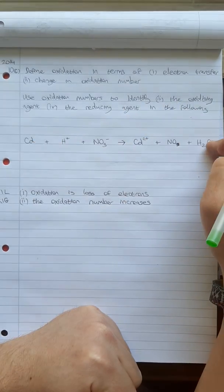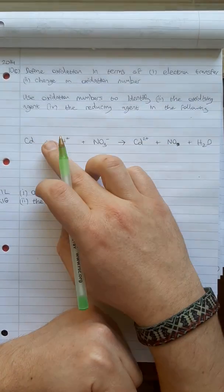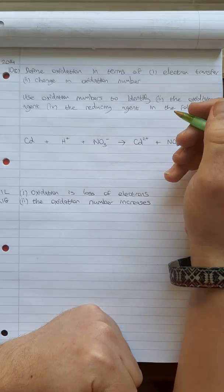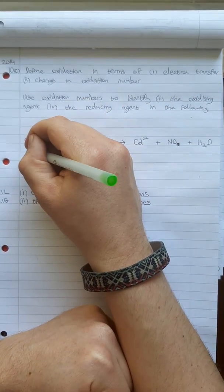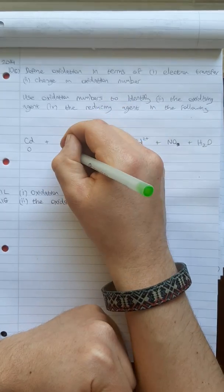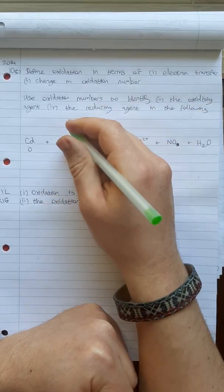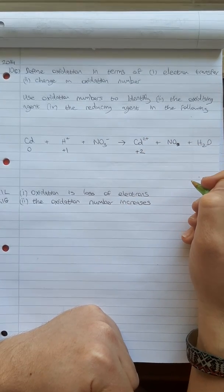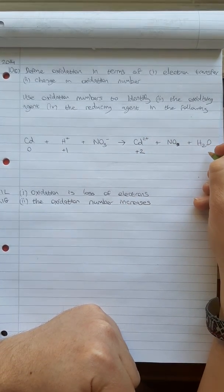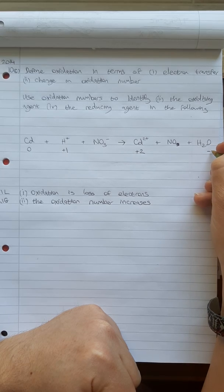So if we just look at this equation, I've given myself plenty of room this time. So you can see exactly what's going on. So I'm going to just assign the oxidation numbers according to the rules. Cadmium there is zero. Hydrogen is an ion, so it's plus one. This cadmium is an ion with a plus two, so it's going to be plus two. Going on to the next ones.